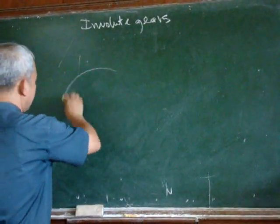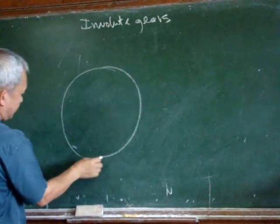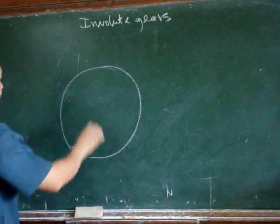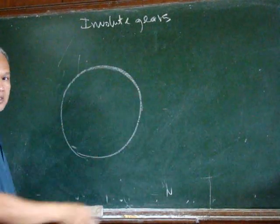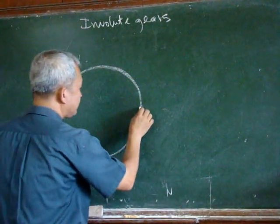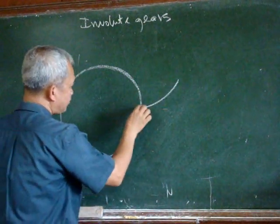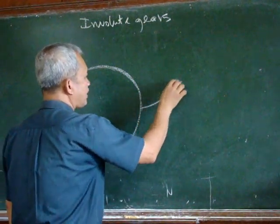Let us take this as a circuit and we can imagine a string around this circuit. We have to unwind the string and allow that end point of the string to trace a line.